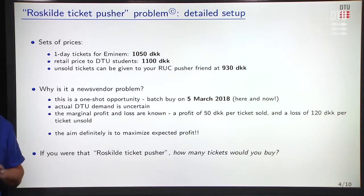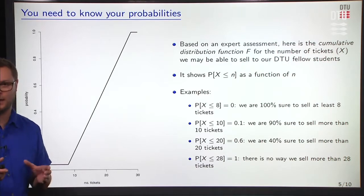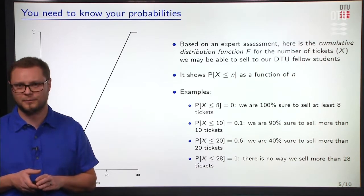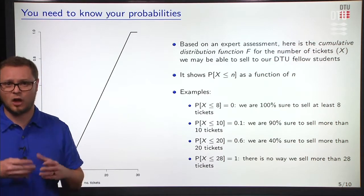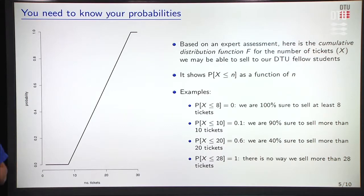So if you were the Roskilde ticket pusher, how many tickets would you buy? Do you have an idea? Actually, for that, you will need to know first about your demand. You will need some expert assessment. If we were to make a poll on campus to find out how many people may or may not buy tickets for this concert, we could represent the result of this poll with a cumulative distribution function, F, that we can abbreviate CDF. And this function represents the number of tickets we may be able to sell to our DTU fellow students with certain probability. So strictly, it shows the probability that this number X is less or equal to N, N being on the X axis, and the probability being on the Y axis.